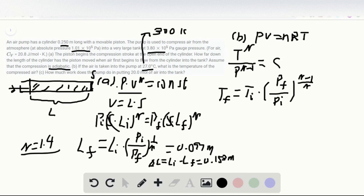So initial temperature is 300 Kelvin, and PF is 3.8 times 10 to the fifth, and PI is 1.01 times 10 to the fifth, and gamma is 1.4. So we have the final solution is 438 Kelvin, and it is also equal to 165 Celsius degrees.